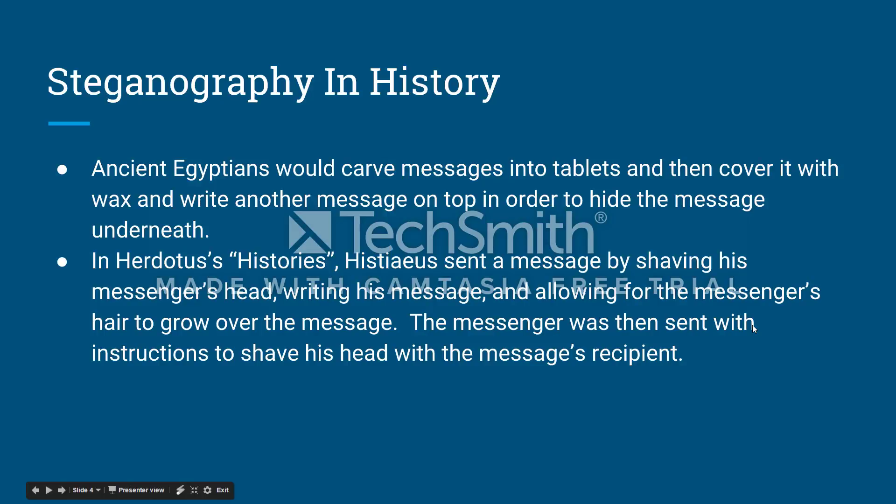How has steganography shown up in history? One could say that the entire espionage network of the world is founded upon steganography. In ancient Egyptian times, people would communicate using stone tablets or by word of mouth. It has been found through archaeological investigations that some people would carve hidden messages into stone tablets only to cover the tablet with wax and write a cover message on top. The ancient Greek historian Herodotus details another method in his histories — a character named Hystaeus sends a secret message by shaving his servant's head, writing his message, and then waiting for the hair to grow back before sending the servant to the desired recipient. The only instruction given was to have the recipient shave the servant's head once in private.